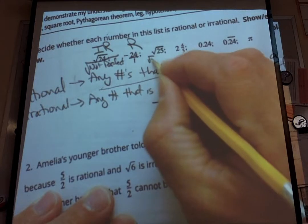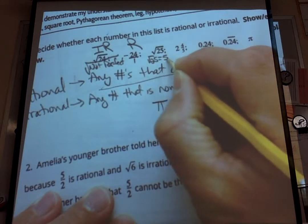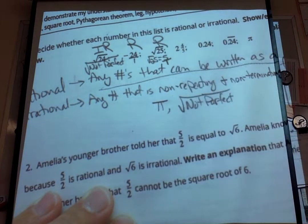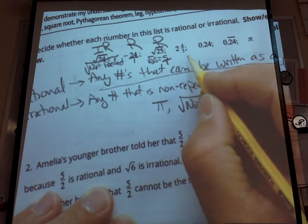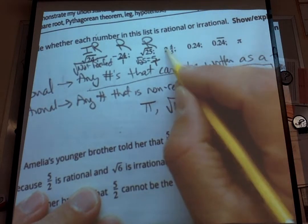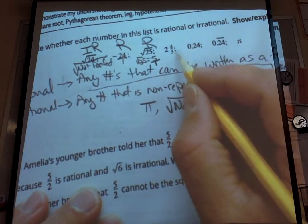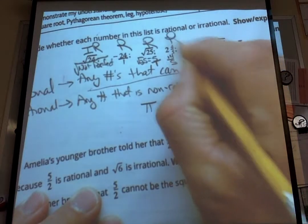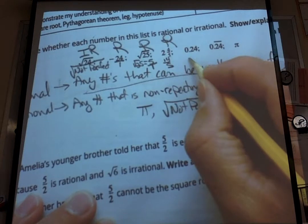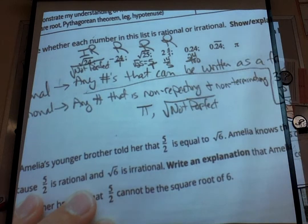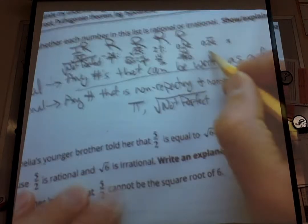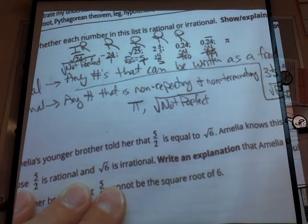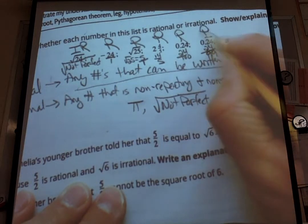The square root of 25 is a perfect square — that equals 5, because 5 times 5 is 25 — so this would be a rational number, since 5 can be written as 5 over 1. The number 2 and 4 fifths is a mixed number, or we could make that into an improper fraction: 10 plus 4 is 14, so 14 fifths. That's a fraction, so it's rational. 0.24 — we could write that as 24 over 100, which is a fraction, so it's rational. And 0.24 repeating can be written as 24 over 99, which is a fraction — it's repeating, and that's okay, so it's rational.